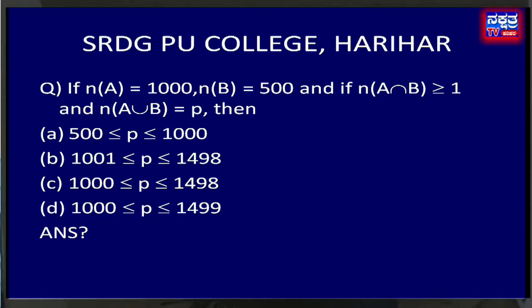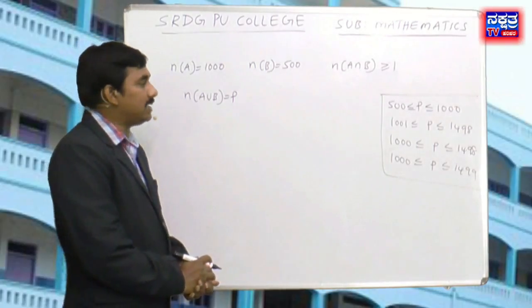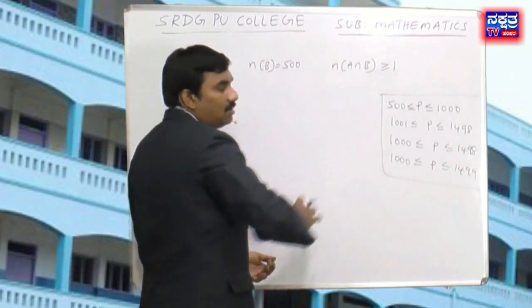Next question: if n(A) = 1000, n(B) = 500, and n(A∩B) ≥ 1, and n(A∪B) = p, then the range of p is: option A: 500 ≤ p ≤ 1000, option B: 1001 ≤ p ≤ 1498, option C: nothing ≤ p ≤ 1498, option D: 1000 ≤ p ≤ 1499. We need to find the range of p.